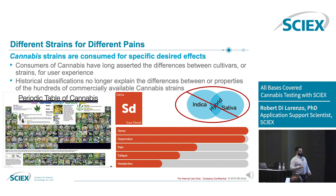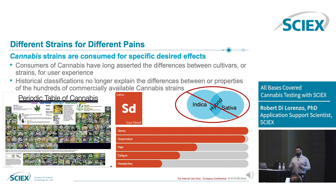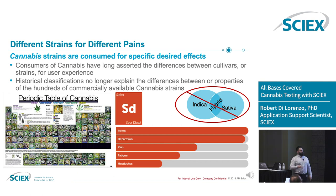Historical classifications — Indica, Sativa, and hybrids — we're finding more and more that these designations don't really matter. These come from genotypes, the genomics of the seed. These crops have been so interbred over the course of the last century that there is no real distinction between them.